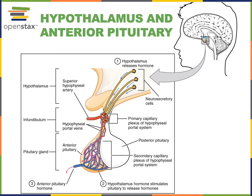Another example is the hypothalamic-pituitary-adrenal axis, where the hypothalamus makes CRH (corticotropin-releasing hormone), the anterior pituitary makes ACTH (adrenocorticotropic hormone), and the cortex of the adrenal gland makes glucocorticoid hormones to help the body respond to chronic stress. The HPG axis is another example where the hypothalamus makes gonadotropin-releasing hormone to stimulate the anterior pituitary to make LH (luteinizing hormone) and FSH (follicle-stimulating hormone), which travel through the blood to the gonads — the testes and ovaries — stimulating production of the sex hormones testosterone, estrogen, and progesterone.